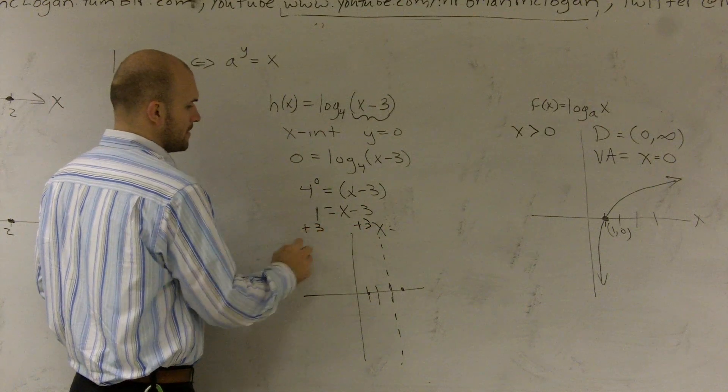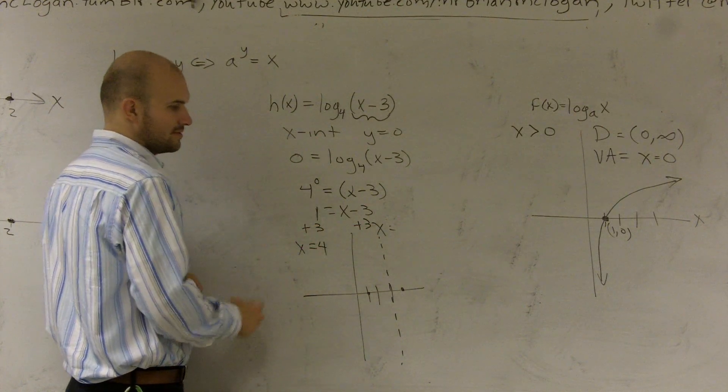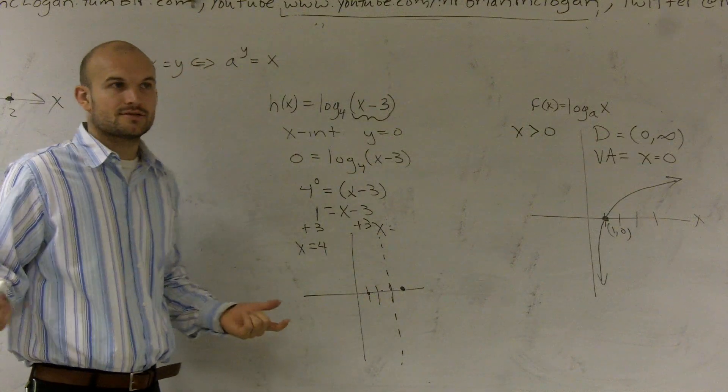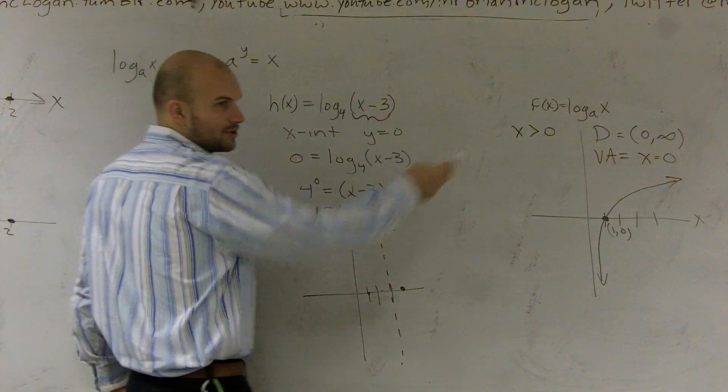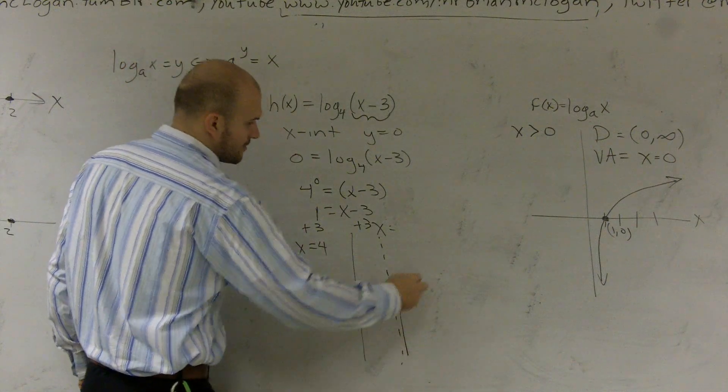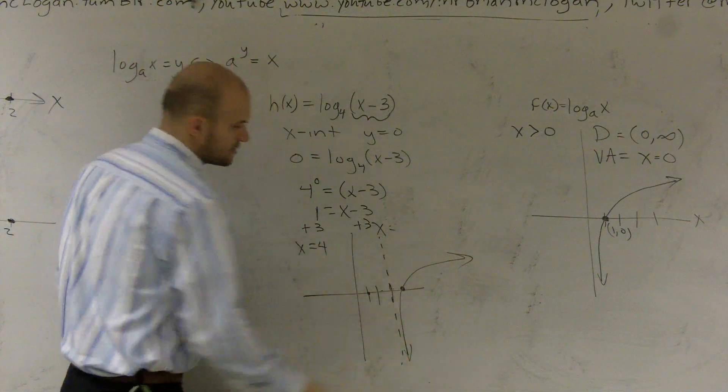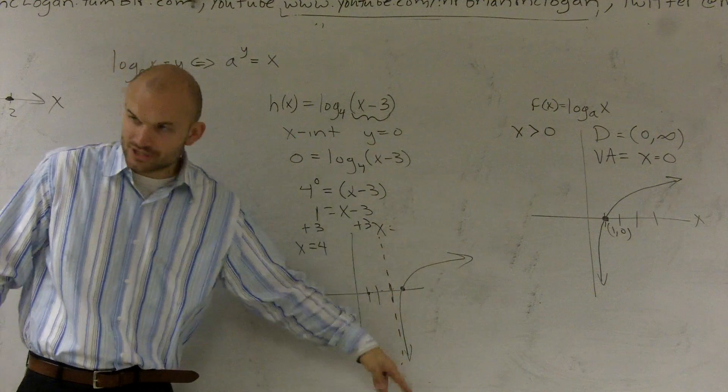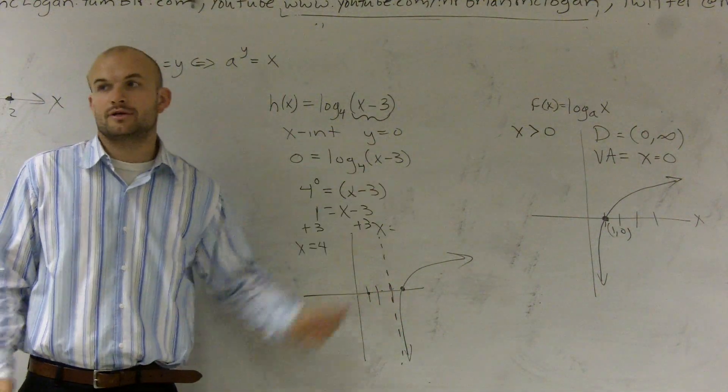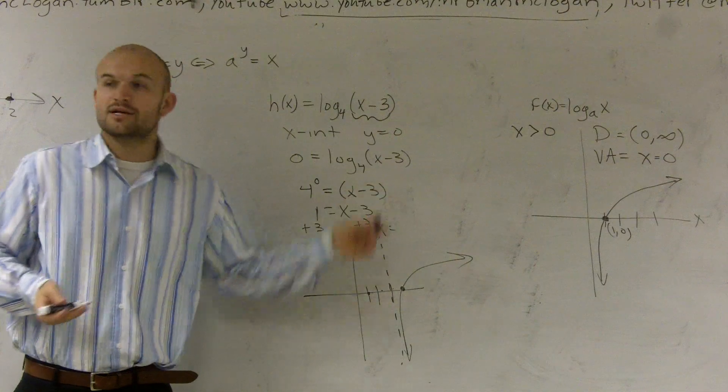Add 3. x equals 4, which I already knew was 4. And then to graph it, you just make it look like your parent function. Since there's no shift up or down or no reflections, it looks like that. And then again, it approaches your asymptote. So yes, you're correct. 3 is not a part of your graph, because it's going to approach 3.